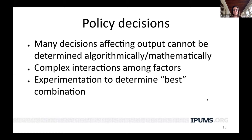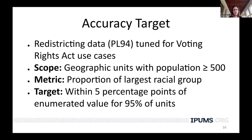For the most recent demonstration data product released in April, the Bureau set an accuracy target just for the redistricting data — voting age and non-voting age population by race — tuned for Voting Rights Act use cases. The scope of this target is geographic units with populations over 500 people. The metric used was the proportion of the largest racial group, with a target of getting that proportion within five percentage points of the enumerated value for 95% of geographic units with population greater than 500. They actually achieved that target for about 99% of geographic units.